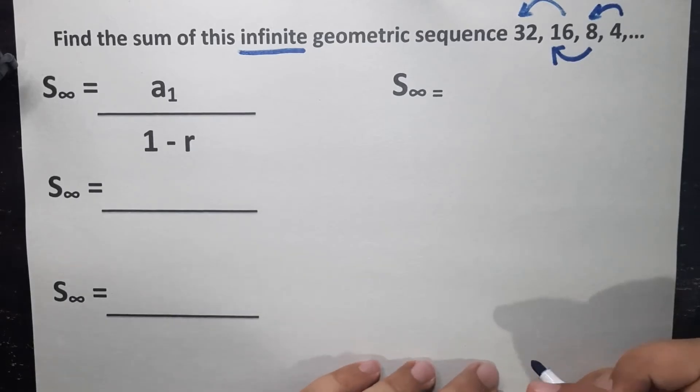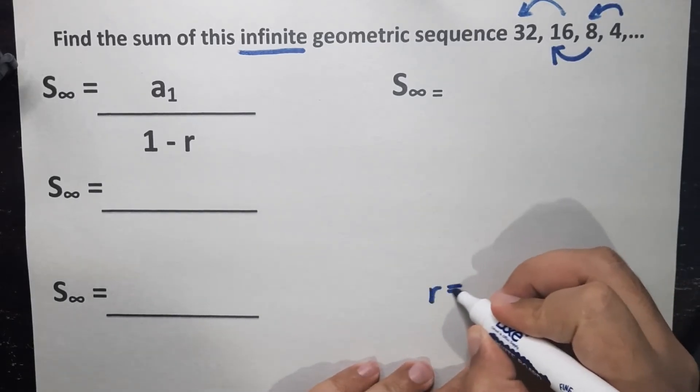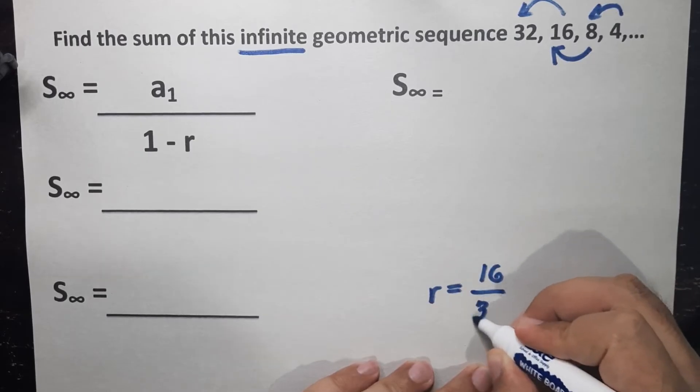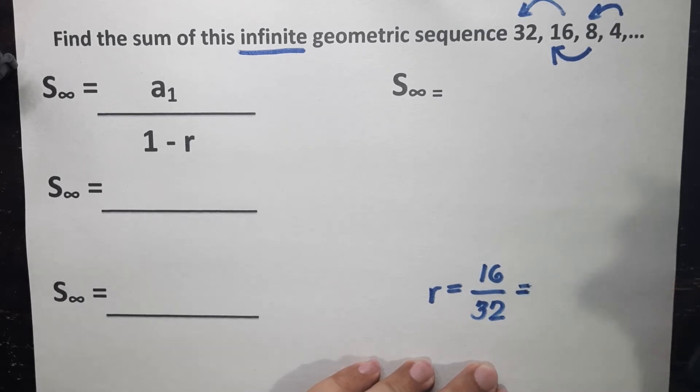You will still get the same value for the common ratio. So let's have 16, current term, divided by the previous term. 16 over 32. So obviously, it will be in fraction form. Our common ratio is 1 half. Now that we already have our common ratio, let's proceed and solve.